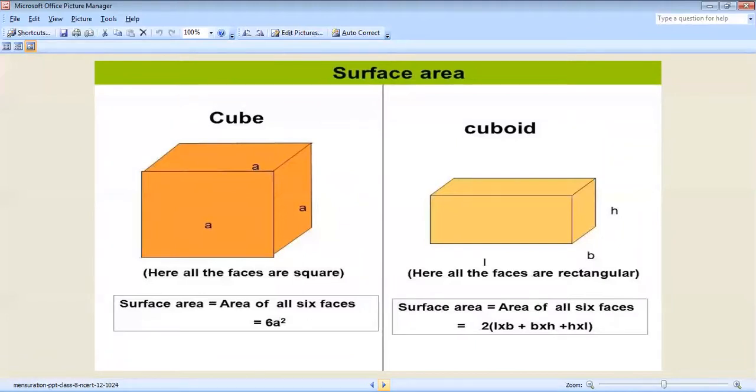Cube - here all the faces are equal. Surface area equals area of all the sides which is equal to 6a squared.